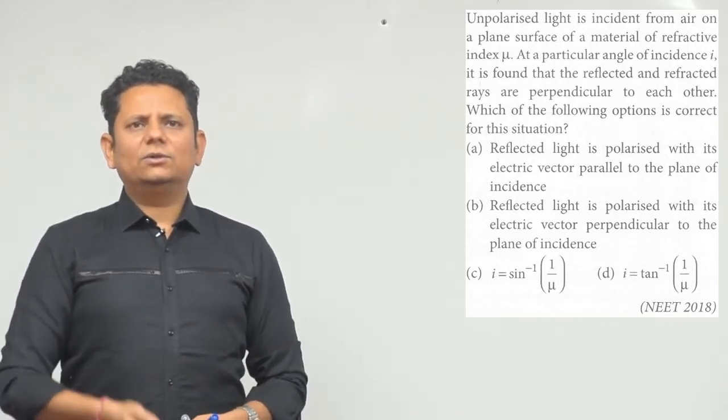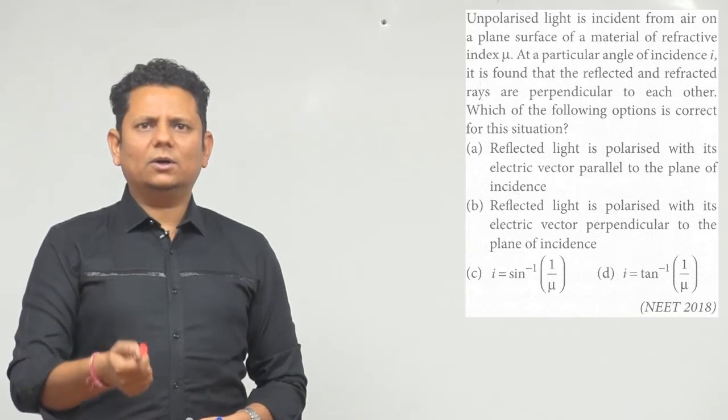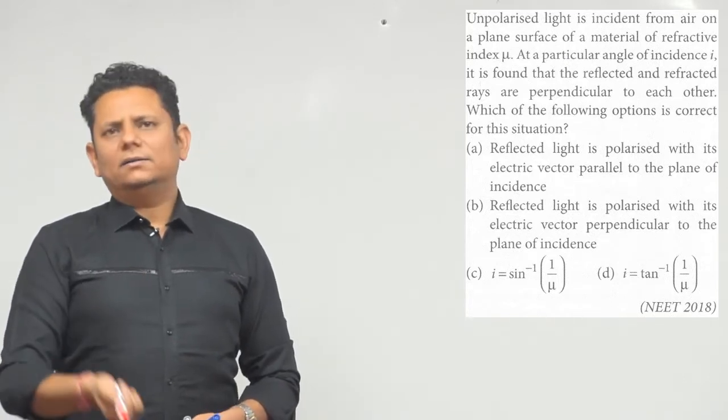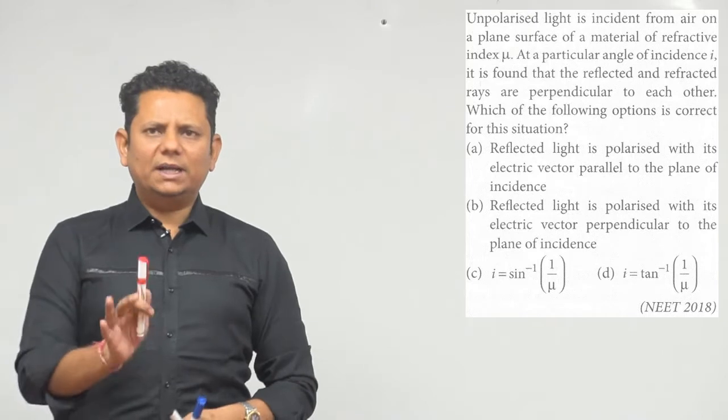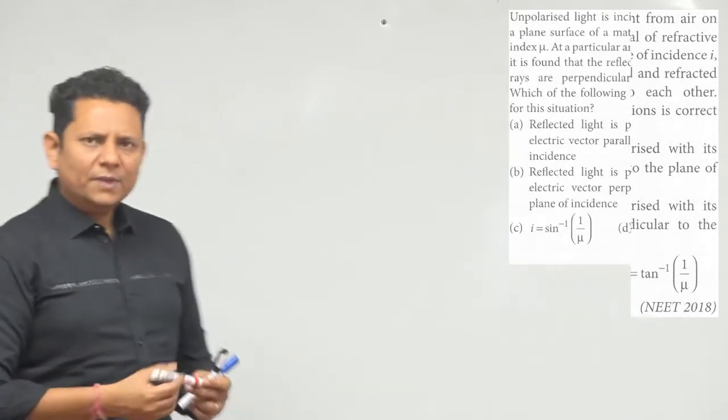Option C is I equals sine inverse 1 by mu, and option D is I equals tan inverse 1 by mu. Now, this is a very simple question. The basics should be clear.